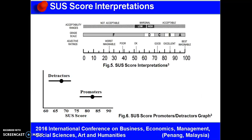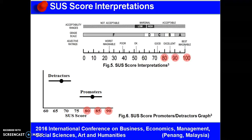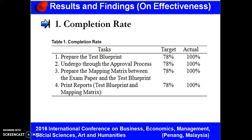Based on the literature, an SUS score of 68 is considered above average and anything below 68 is below average. An SUS score could be interpreted as either a promoter score or a detractor score. As shown in Figure 6, promoters have an average SUS score of 82, while detractors have an average score of 67 with a p-value less than 0.01. If the system has an SUS score greater than or equal to 80, it implies that users may most likely promote the use of the system to other people.